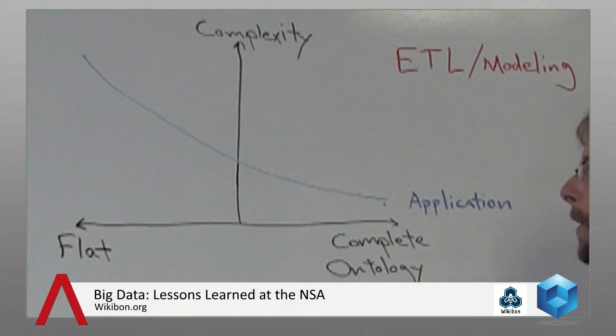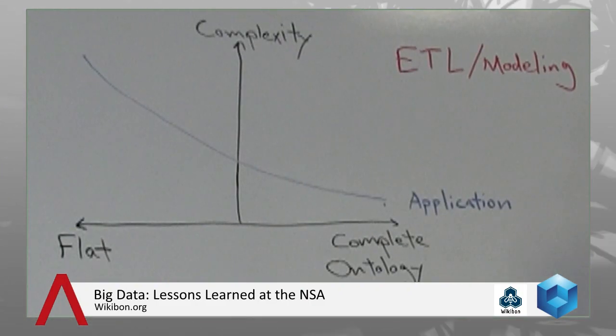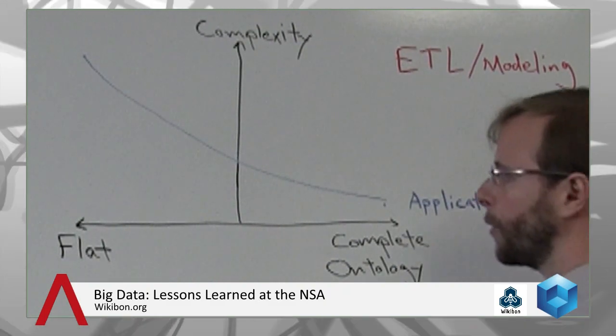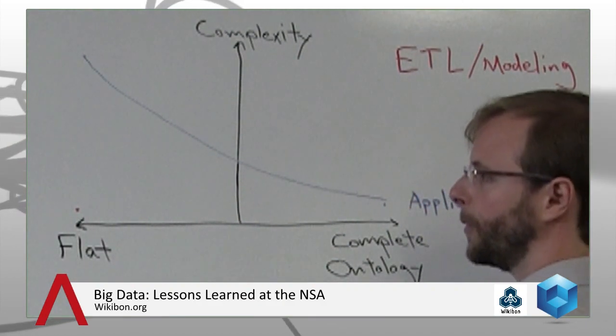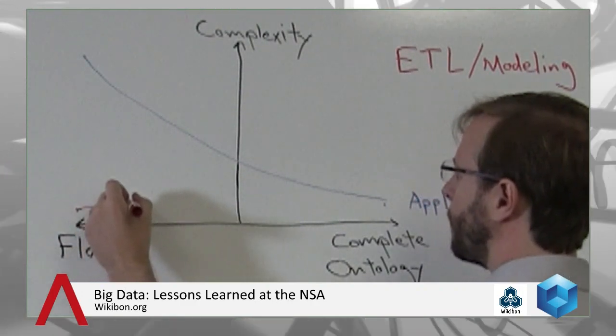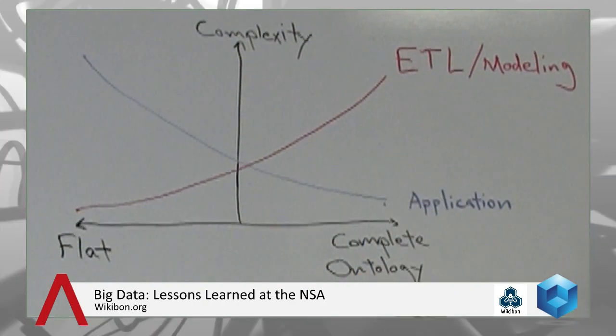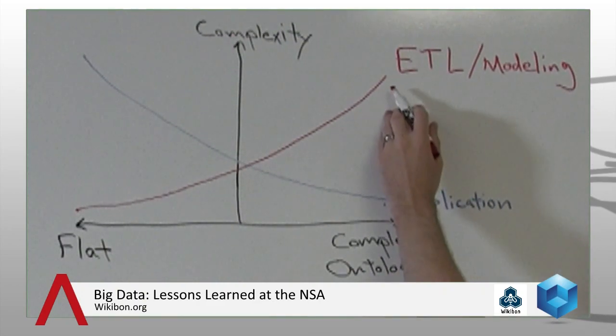There's a flip side as well. Flat schemas let you bring data in very quickly and have it available for application development before a large modeling process. So there's a second complexity curve—the ETL or data modeling curve, representing time to model the data. Throwing it into flat files is very quick. But going to a complete ontology approach could take months or even years before you get a model that handles all the data. And as you bring in new data sets, you may have to totally reorganize that ontology to handle new complexities.